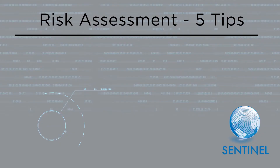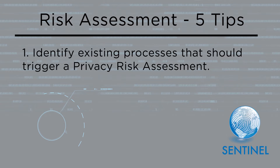With that context, here are five tips for you to consider as you look at this area within your organization. First, identify existing processes that should trigger a privacy risk assessment. A few of the common areas to review include vendor onboarding, contract renewals, or anything that triggers an information security assessment.